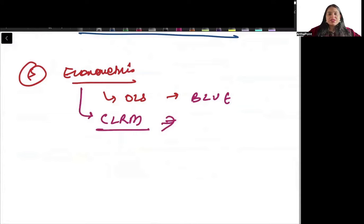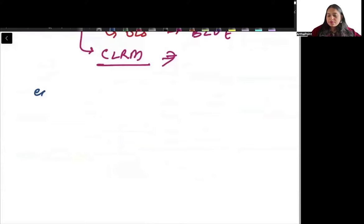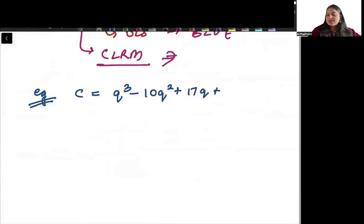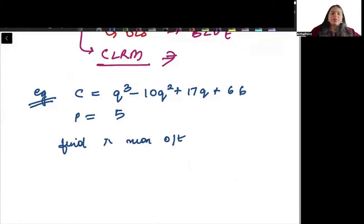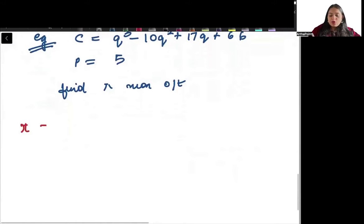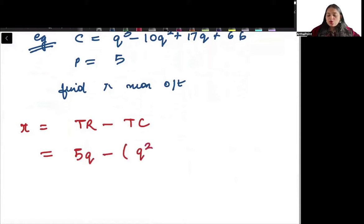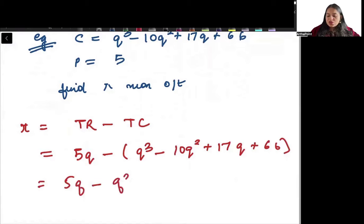Let me discuss a few questions that can be asked in the exam. For example, given the cost function Q³ - 10Q² + 17Q + 66 and price of the good as 5, find the profit-maximizing output. We know profit = total revenue - total cost, where total revenue = P × Q. So profit = 5Q - Q³ + 10Q² - 17Q + 66.